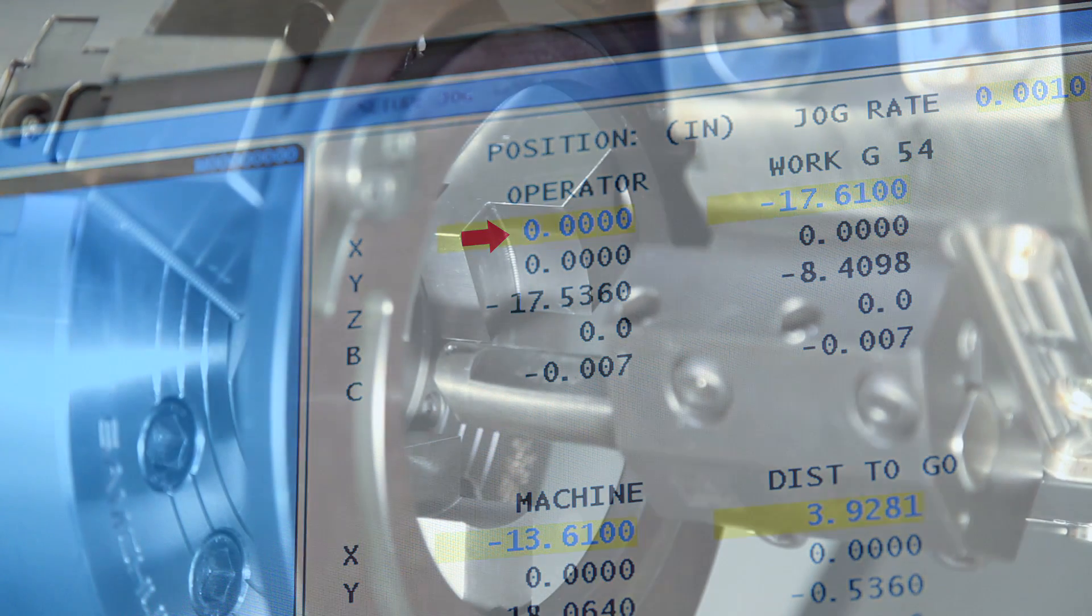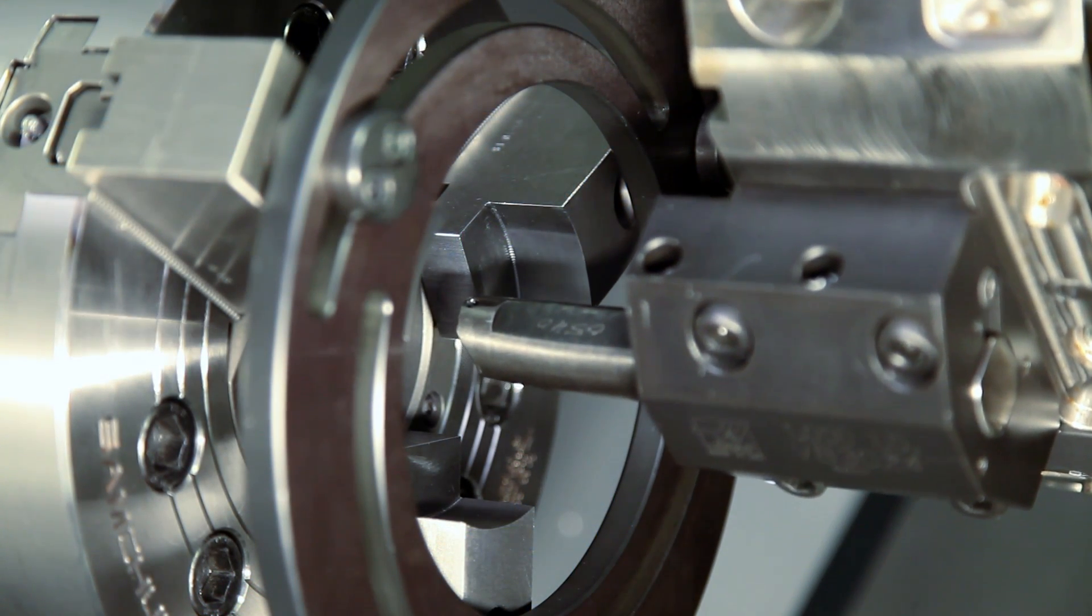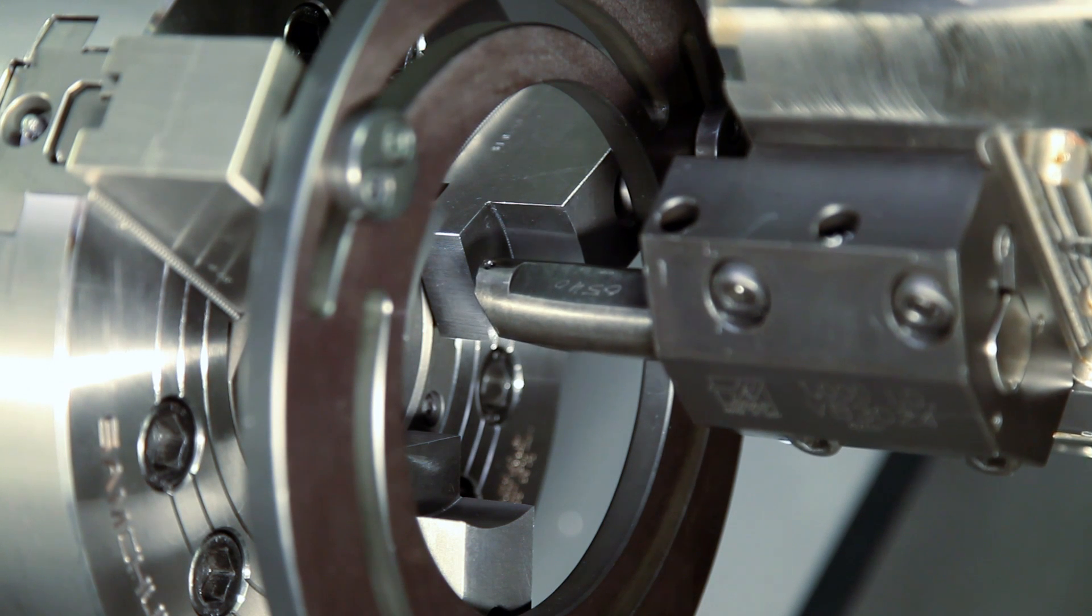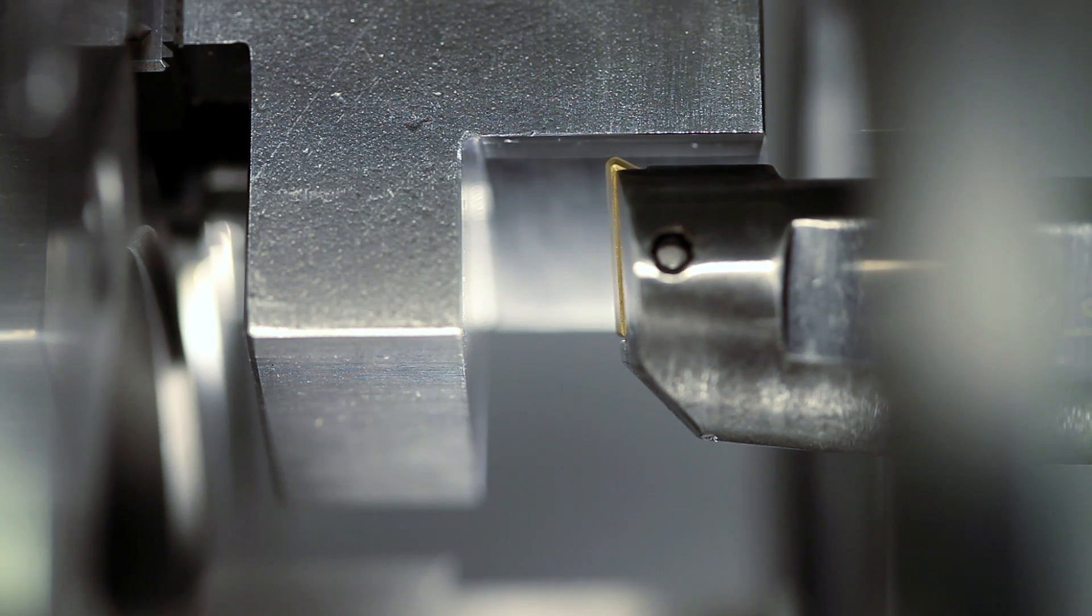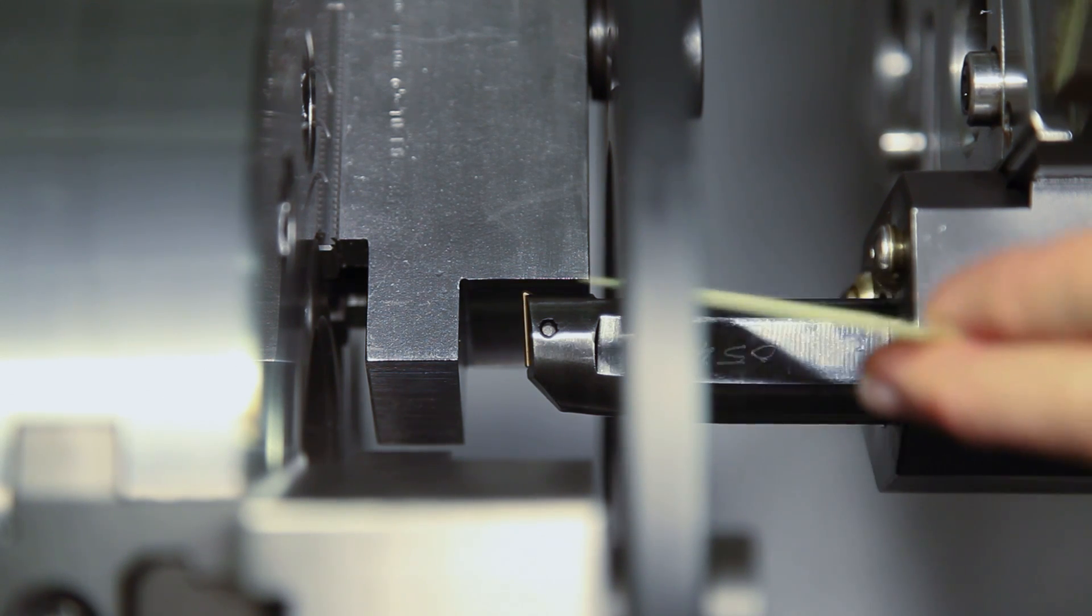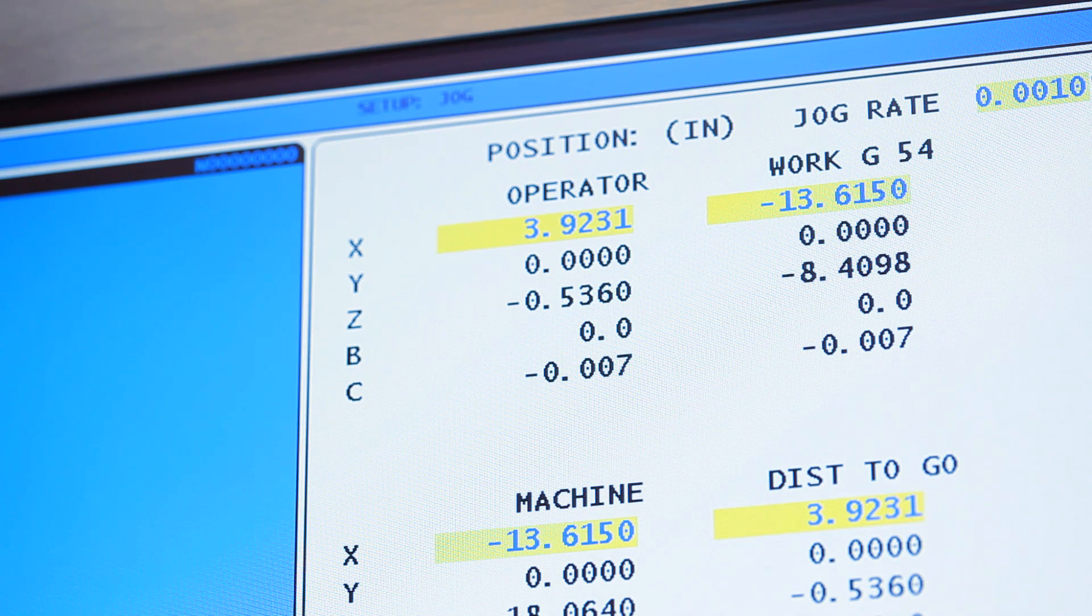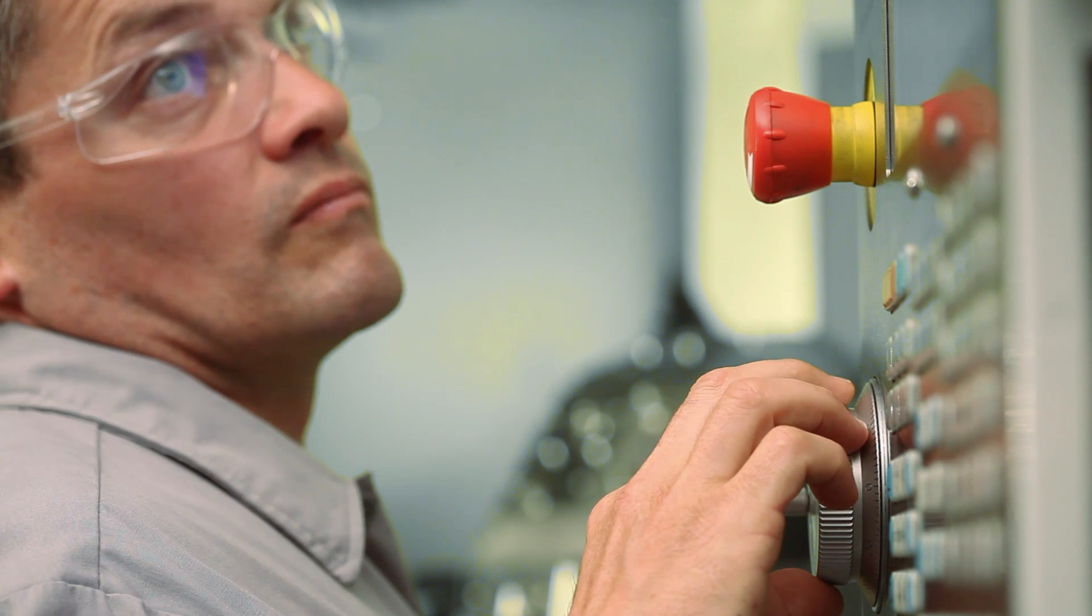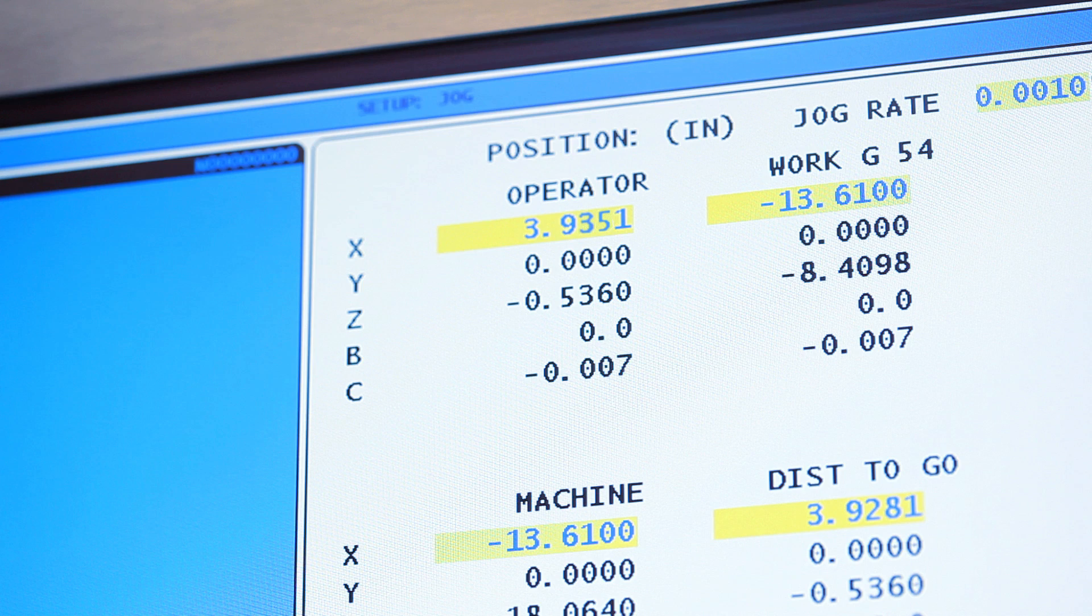Now that we know where X0 is for Tool 1 and offset G54, let's find the jaw face diameter. Jog to a point very close to the face of the jaws. Use a slip of paper and bring the tool to the jaw face until the paper is pinched by the insert tip. The X-Axis operator field now shows us the diameter that our jaw faces are set to.